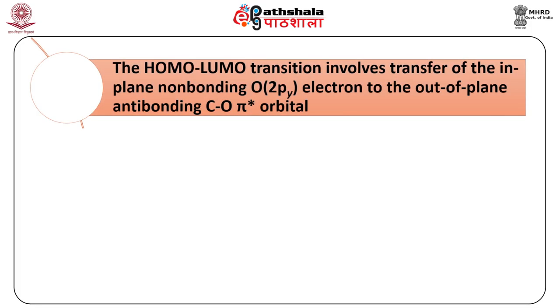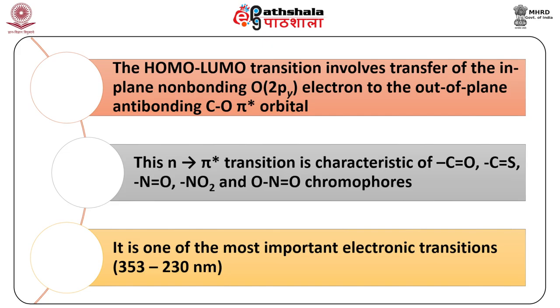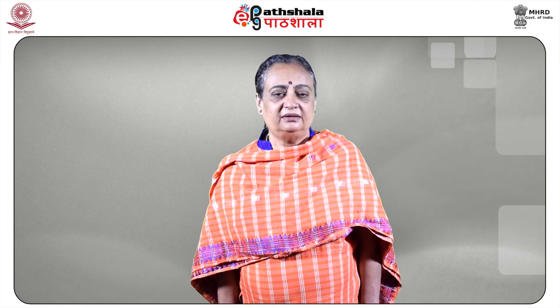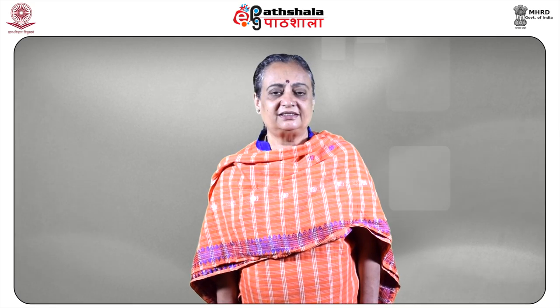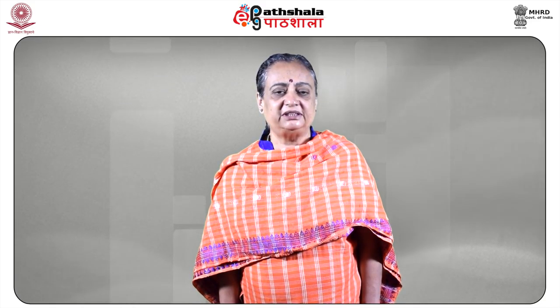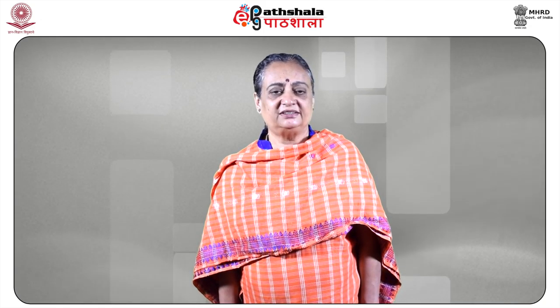The HOMO–LUMO transition involves transfer of the in-plane non-bonding oxygen 2py electron to the out-of-plane anti-bonding C=O π* orbital. This n→π* transition is characteristic of carbonyl C=O, N=O, NO2, and ONO chromophores and occurs in the range 230–353 nm. In summary: group theory labels the MOs of cis and trans butadiene and determines whether transitions are allowed or forbidden. All transitions are allowed for cis-butadiene but some are forbidden for trans-butadiene due to the Laporte selection rule. For formaldehyde, the n→π* transition is forbidden by selection rules but is observed; the π→π*, n→σ*, and σ→π* transitions are all allowed.